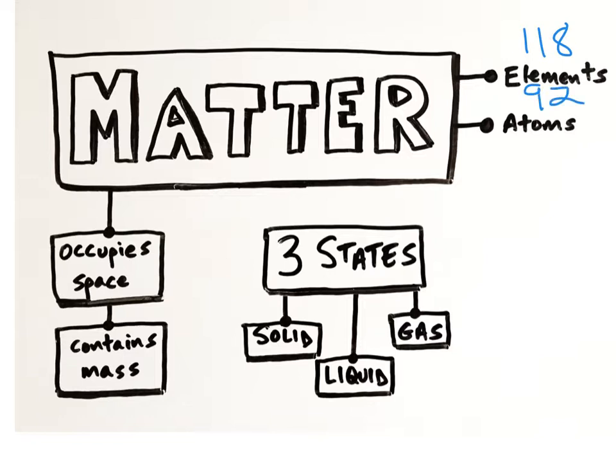Fortunately for us biologists, only 26 of these elements are normally found in the human body, and are the focus of our study in anatomy and physiology. Most elements have a one- or two-letter chemical symbol, with the first letter always capitalized and the second letter always lowercase. Symbols are often abbreviated forms of the element's English, Latin, or Greek name.